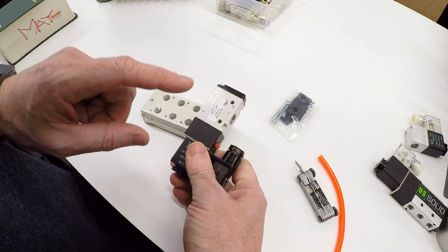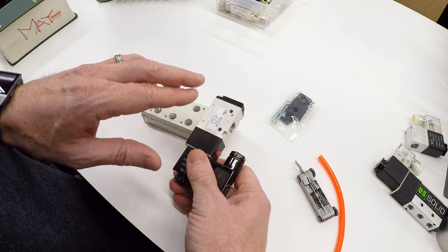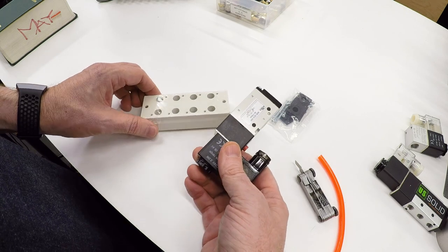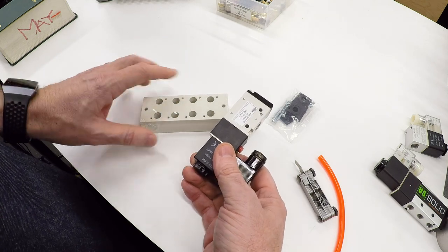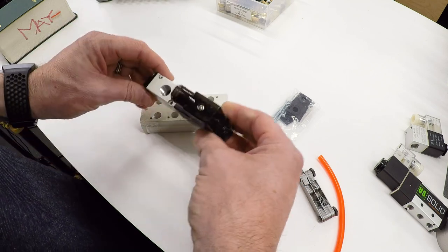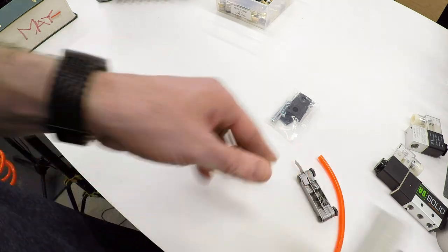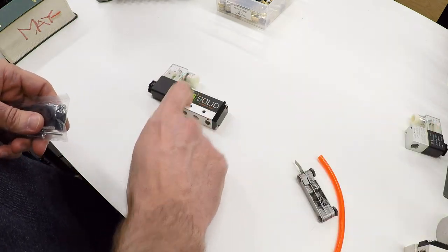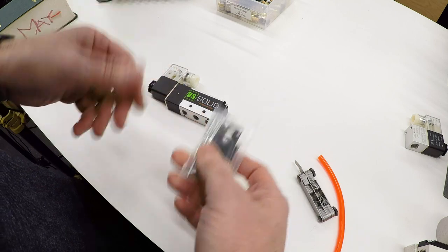Do make sure that you get the right manifold for the right valve. The documentation will show that. When I ordered these, I actually ended up with a manifold that was too small the first time. That was for a different valve series, so I had to place another order. But I've got the valves that I need now. So let's go ahead and hook up one of these valves for the double acting cylinder and see it work.